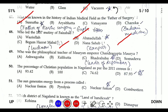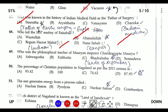Question forty-nine: who was the philosophical teacher of Mauryan emperor Chandragupta Maurya? The answer is Bhadrabahu, who was a leader of the Digambara sect. It is said that Chandragupta committed suicide after a great famine when he went south with Bhadrabahu to fast unto death — a practice called Sallekhana.